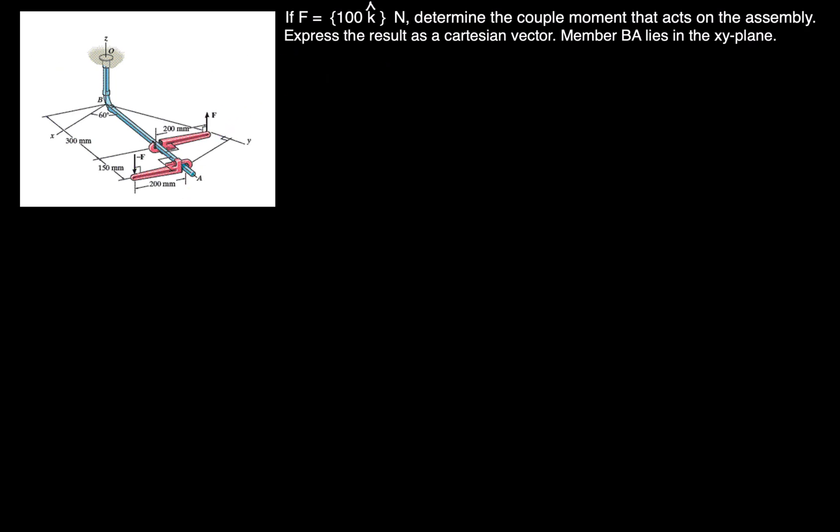And so just a refresher on the couple moment here, when we're calculating couple moment, we use this formula most of the time. And that is M = (r1 - r2) × F. And so what this r1 and r2 are, are position vectors starting from the origin to the point of the forces acting. And so if I draw that on the diagram, it's going to look something like this.